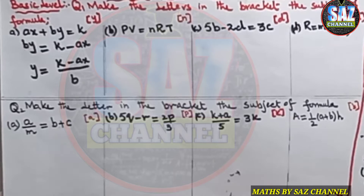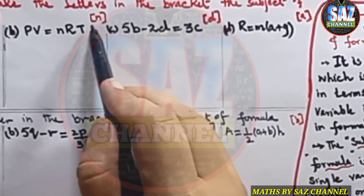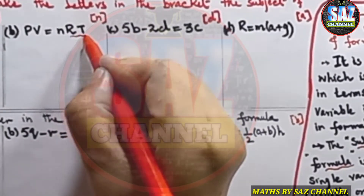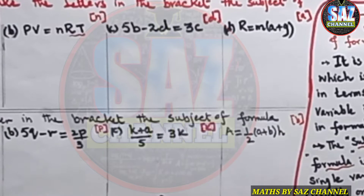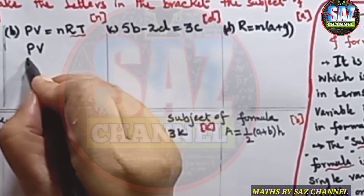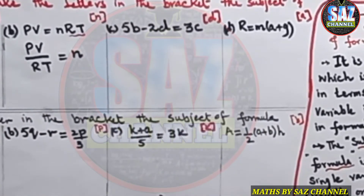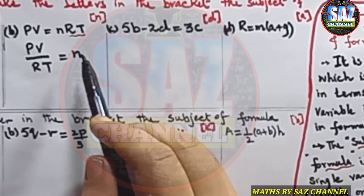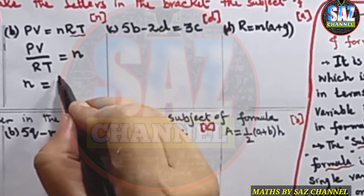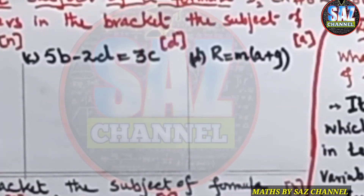Part B is pv = nrt, and we need to make n the subject. Here n is multiplied by r and t, so we shift rt to the other side: pv / rt = n. Since n should preferably be on the left-hand side, we rearrange to get n = pv / rt. These questions are easy — we just need to focus on basic algebraic operations.